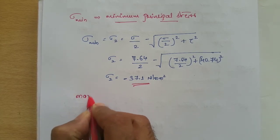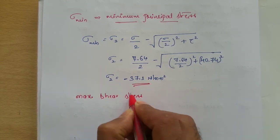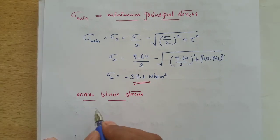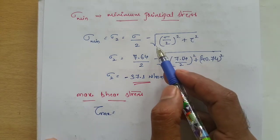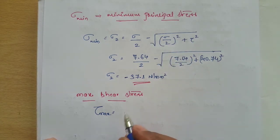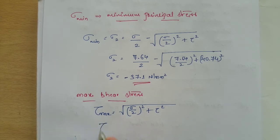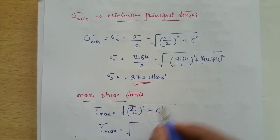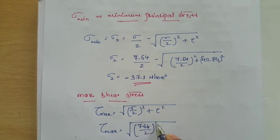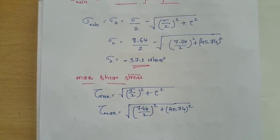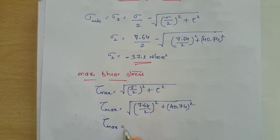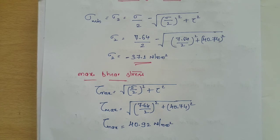Finally, we find the maximum shear stress. The maximum shear stress is the square root term itself: tau_max = sqrt((sigma/2)² + tau²). Substituting: tau_max = sqrt((7.64/2)² + (40.74)²), which gives tau_max = 40.92 Newton per mm².